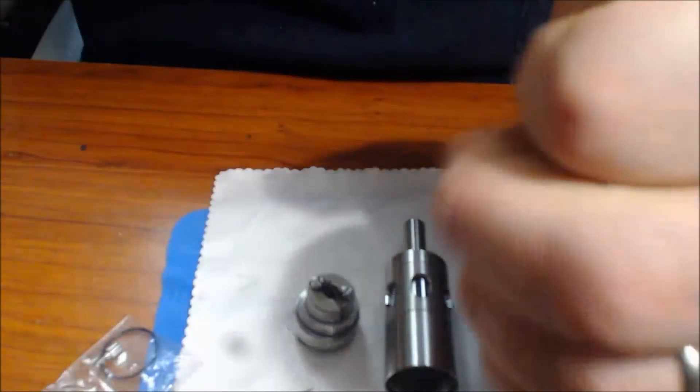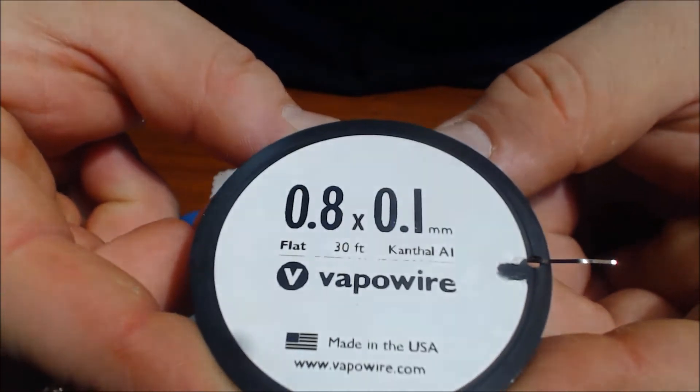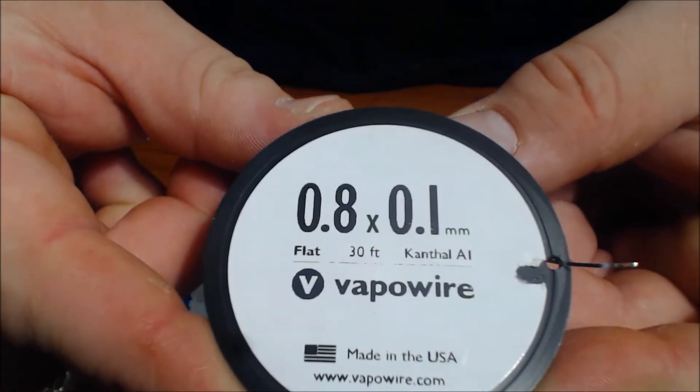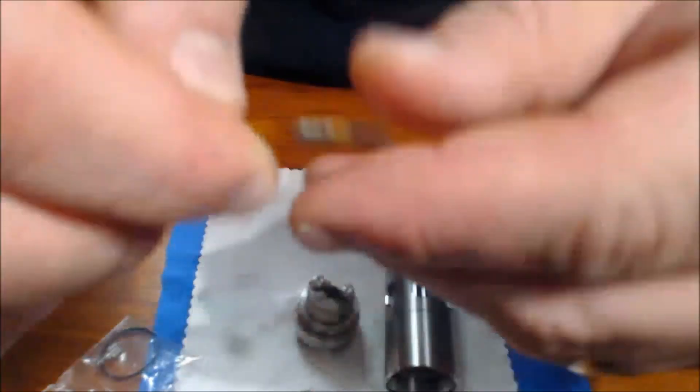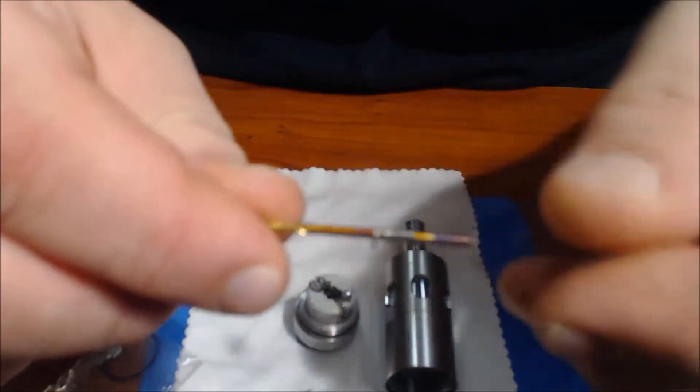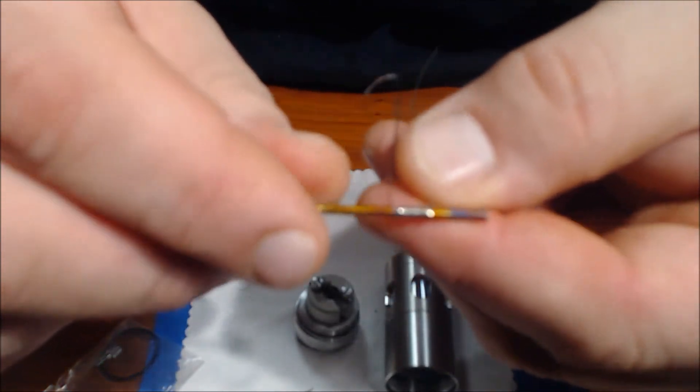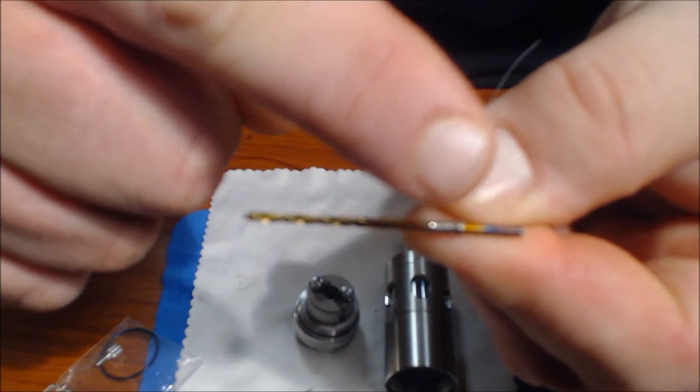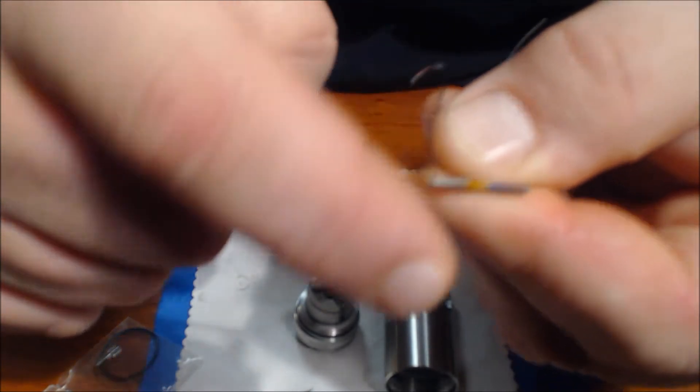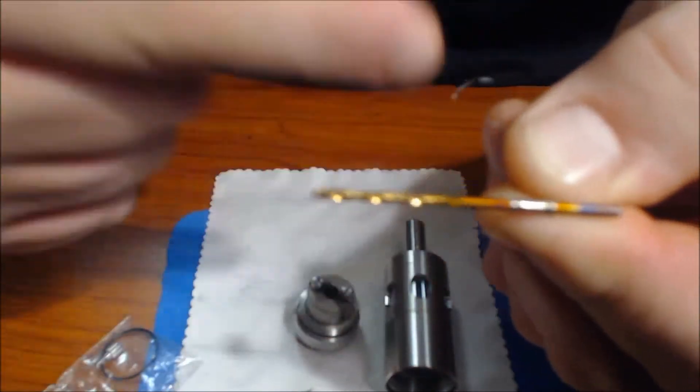Now, the wrap I did, I used 0.8 x 0.1 kanthal ribbon wire. And what I did was I used a 5/64th drill bit and I did an 8 wrap. And when I started wrapping, I would wrap a quarter of the way over the previous wrap. And all the way around, I did that 8 times.